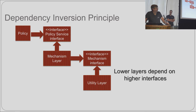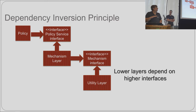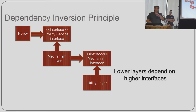Dependency Inversion says the layers should depend on abstractions. The policy layer depends on a policy interface; the mechanism layer provides the implementation of that. What really blew my mind is that it's the policy layer that defines the interface — not the mechanism layer, not the lower layer. The policy layer says 'this is what I want to do,' and the mechanism layer says 'I will provide that functionality for you.' It really takes object-oriented design thinking and turns it on its head — it inverts it.